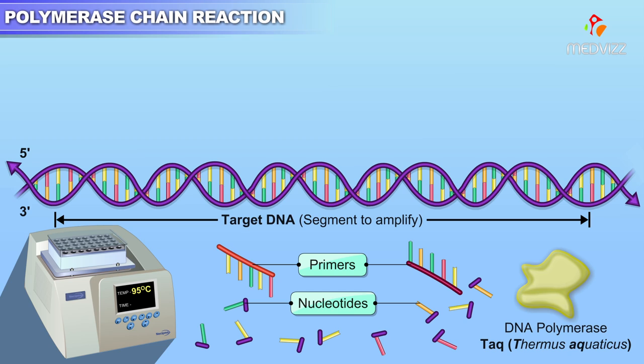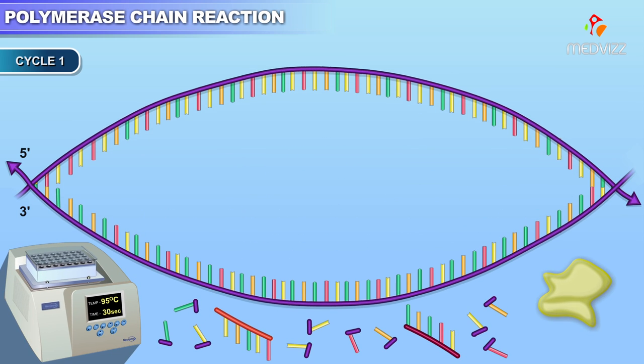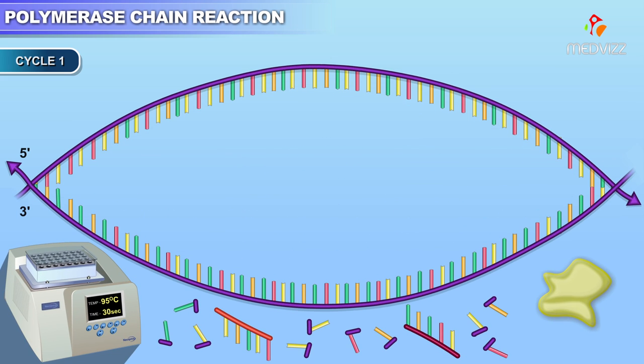In PCR, the reaction mixture is heated to 95 degrees Celsius for 30 seconds to denature or separate the DNA strands. The temperature is then lowered to 55 degrees Celsius for 30 seconds, which allows the oligonucleotide primers to anneal to known DNA sequences flanking the target DNA.